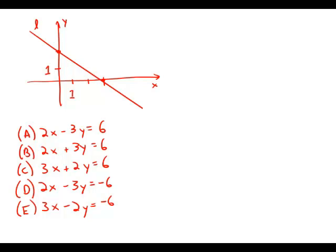In the coordinate system, which of the following is the equation of line L? Well, first of all we notice that L goes through this point here which is (3, 0).